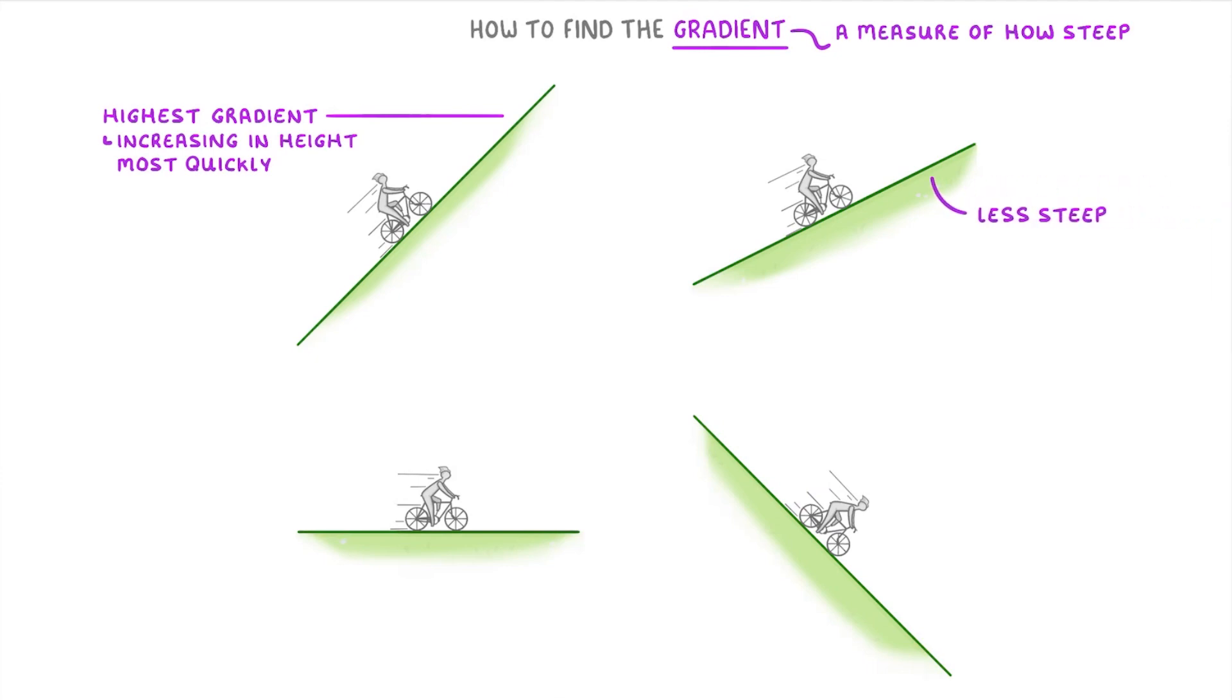Meanwhile this second one is less steep and so has a lower gradient. The slope in the bottom left though isn't rising at all. It's completely flat. So this one has a gradient of zero because it's not going up or down.